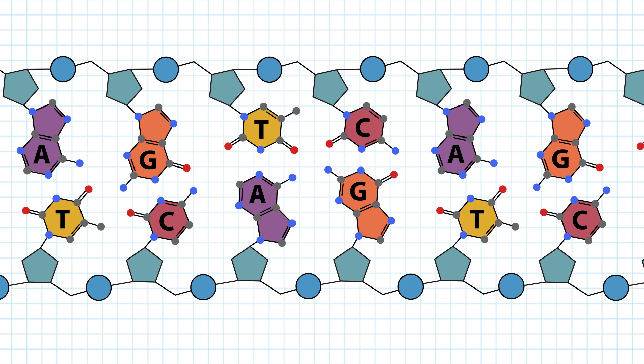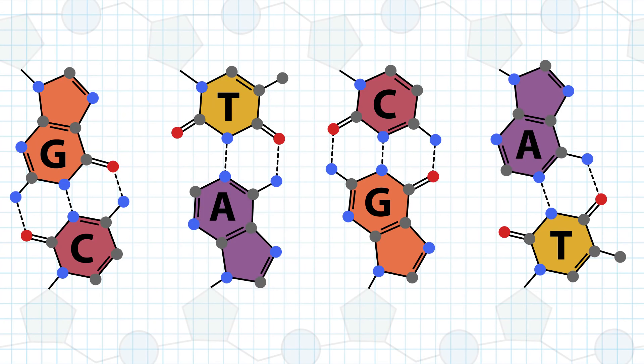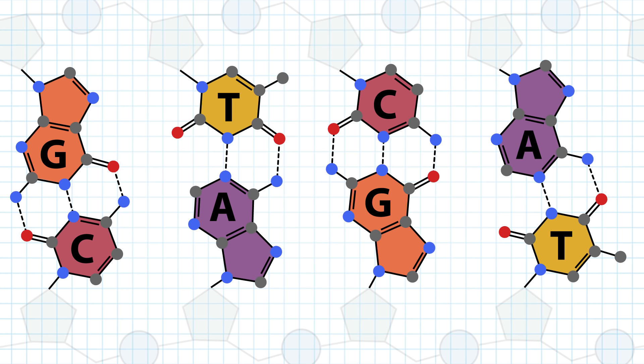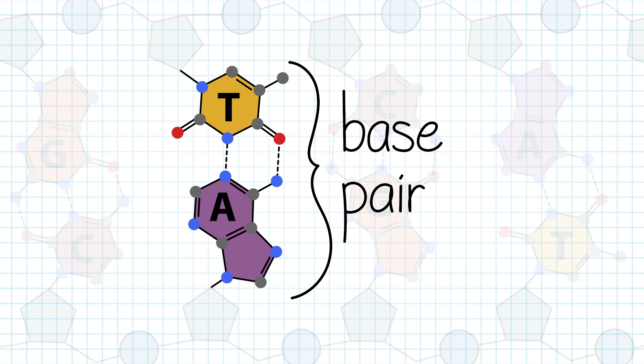Although the nucleotides come together through covalent bonds in the backbone, the two DNA strands interact through non-covalent hydrogen bonds between the bases. Each base forms multiple hydrogen bonds with its complementary base on the opposite strand. Bound together by hydrogen bonds, each unit is called a base pair.